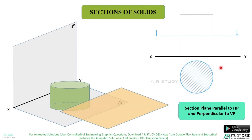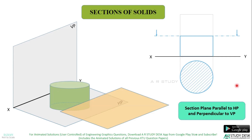Now in the front view, the remaining portion of the cylinder is shown by these thick lines. This is called the true shape of the section. Hope the section plane parallel to HP and perpendicular to VP is clear to you. This is just the concept. When you work out a problem, you will name the solid and also the points where the section plane cuts the solid. Now we shall see the next section plane.